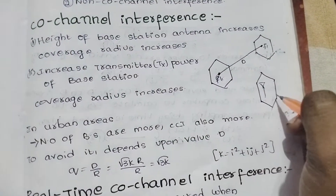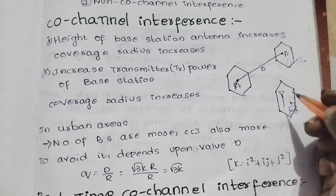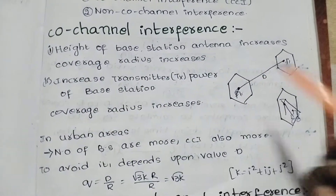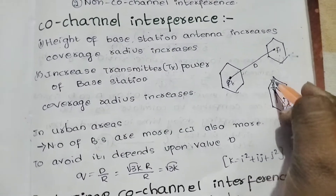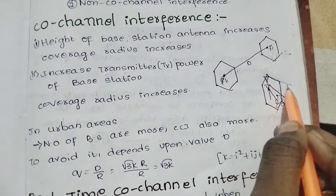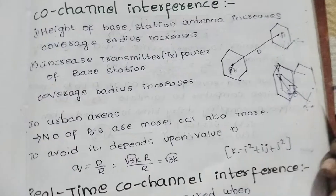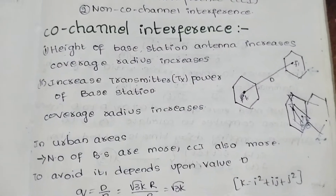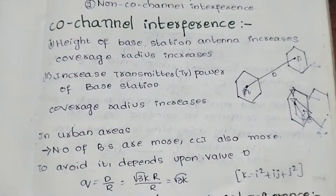We have a mobile unit and a base station unit. The mobile unit communicates with the base station. As the height of the base station increases, the coverage radius increases. We show the coverage radius and the results in the other cell. So we have interference in the other cell — at the base station, we have a signal and interference disturbance noise from the other cell.